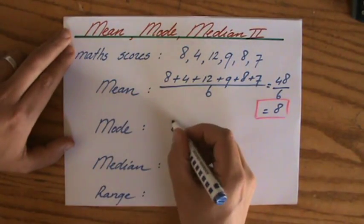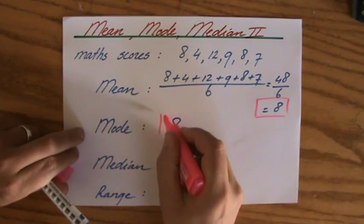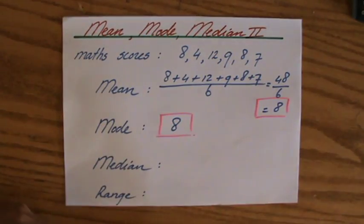So the mode is, or happens to be the same as the mean—that's not always the case. In this case it is. The mode is also 8.